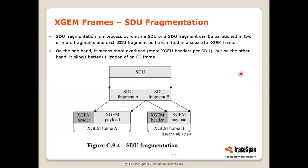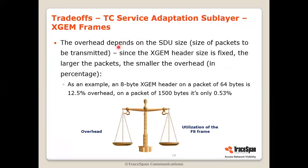Going back to the world of XGS-PON: fragmentation is a mechanism that allows you to divide an SDU into smaller fragments, each of which will be transmitted in a separate XGEM frame. The XGEM frame has its own header. So on the one hand, fragmentation means more overhead because there are more XGEM headers; on the other hand, it allows better utilization of a frame. The overhead depends on the SDU size — because the XGEM header size is fixed at 8 bytes, the larger the packets, the smaller the overhead. For example, if the packet is 64 bytes, the header is 8 out of 64, which is 12.5%. On the other hand, if the packet is 1500 bytes, it will be only a little bit more than half a percent.